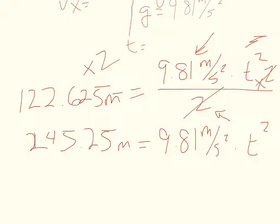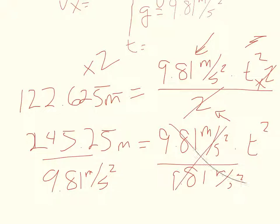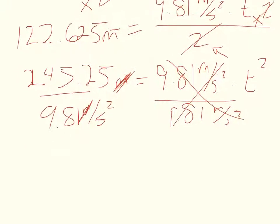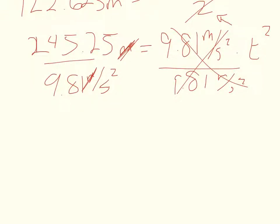Now I want to get rid of this 9.8, so I'm going to divide both sides by 9.81 m/s². Cancels over here. Over here this meters cancels with this meters, and we're left with seconds squared as our unit, which is, we want seconds, we're looking for time, so we want some kind of second, so we're still on the right track.